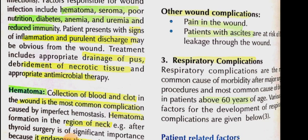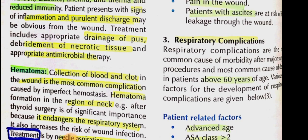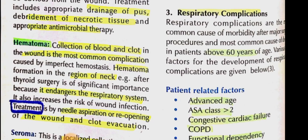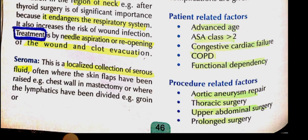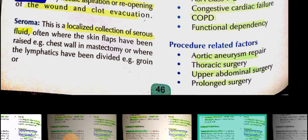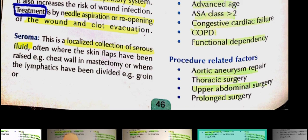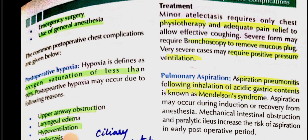Respiratory complications occur more commonly in patients over 60 years of age. Patient-related risk factors include congestive heart failure and COPD. Procedure-related factors include aortic aneurysm repair, thoracic surgery, abdominal surgery, prolonged surgery, emergency surgery, and use of general anesthesia — all of which increase the chances of respiratory complications.